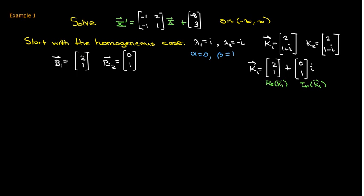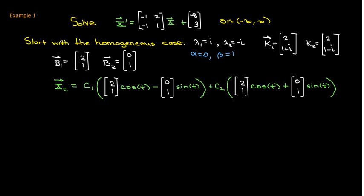And so this new vector b1 is the real part and the vector b2 is the imaginary part. And so we have two parts to our solution then. We have b1 times cosine of beta t minus b2 sine of beta t and then b1 cosine of beta t plus b2 sine of beta t. So since beta is 1 here we've got our complementary solution.